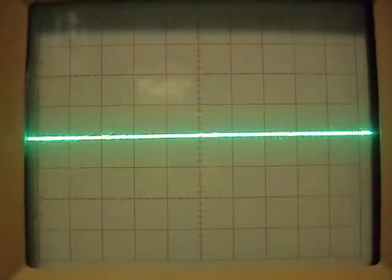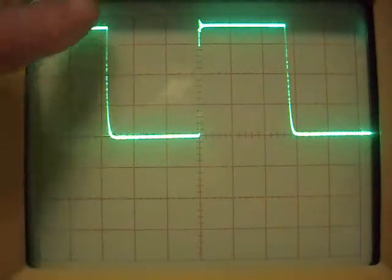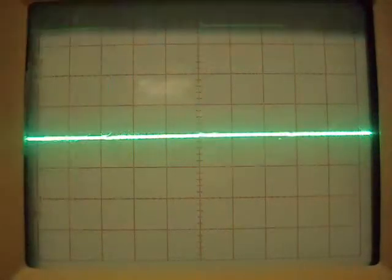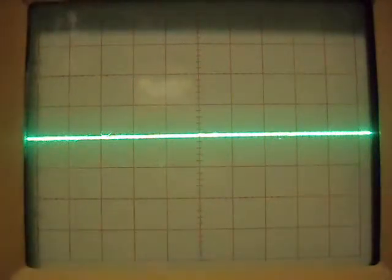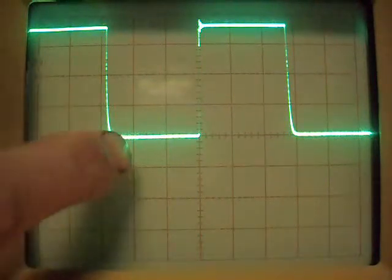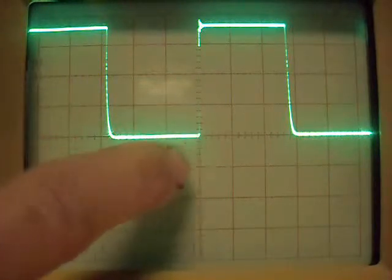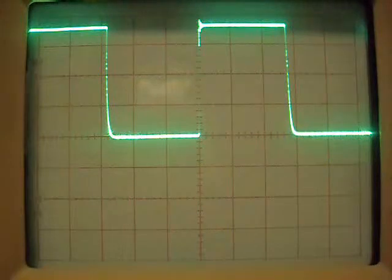Now we'll try a Schottky diode to illustrate the difference. Schottky diode, now we'll try a small signal diode. No undershoot, no carry through, nothing. Good square, clean signal at 88 kilohertz.